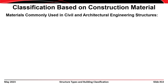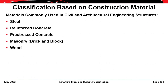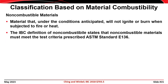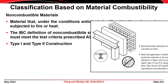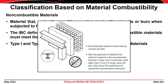Buildings are often classified by the material used in their construction. Common building materials include steel, reinforced concrete, pre-stressed concrete, masonry (which includes brick and cement blocks), and wood. Materials are also broadly characterized as either combustible or non-combustible. Non-combustible materials are those that won't catch fire when subjected to heat or flame. Type 1 and Type 2 construction generally means the materials are non-combustible, including steel, concrete, and masonry elements.